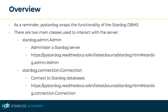As a reminder, PyStardog wraps the functionality of the Stardog DBMS — the database management system — and interacts with it using the underlying HTTP API. In PyStardog, there are two main classes used to interact with the server: Stardog.Admin.Admin with a capital A, which allows you to administer a Stardog server, and Stardog.Connection.Connection with a capital C, which allows you to connect to Stardog databases.